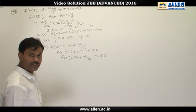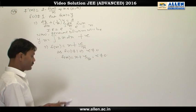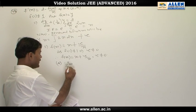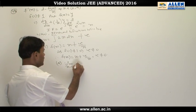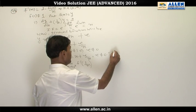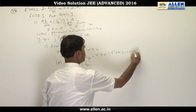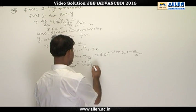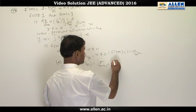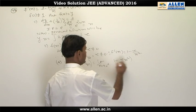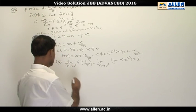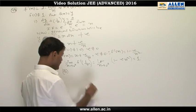Now we will check the different options. In option A, we have to find the limit as x → 0+ of f'(1/x). From this we can find f'(x) = 1 - c/x², and clearly this limit will be equal to 1 - c·x² = 1. So option A is correct.